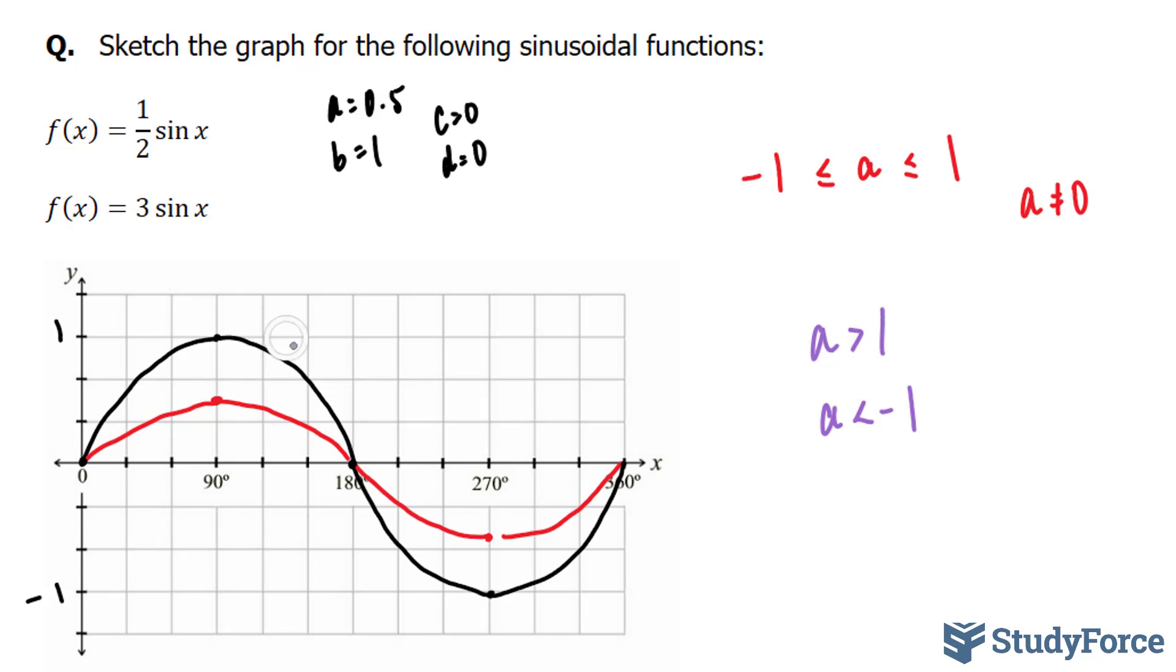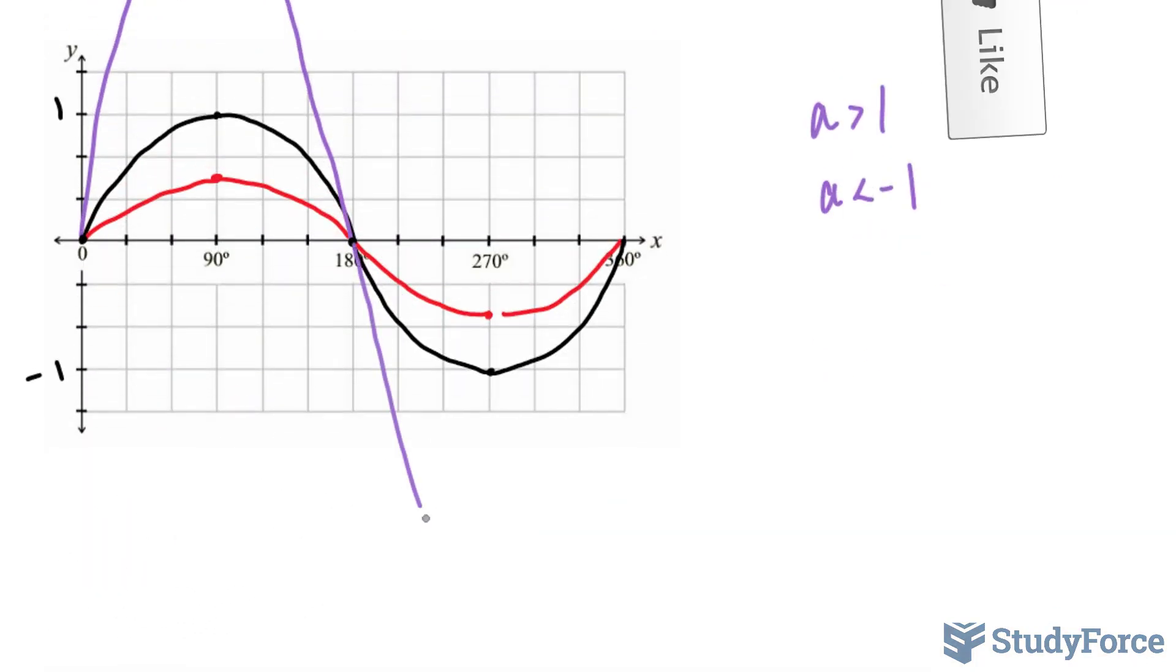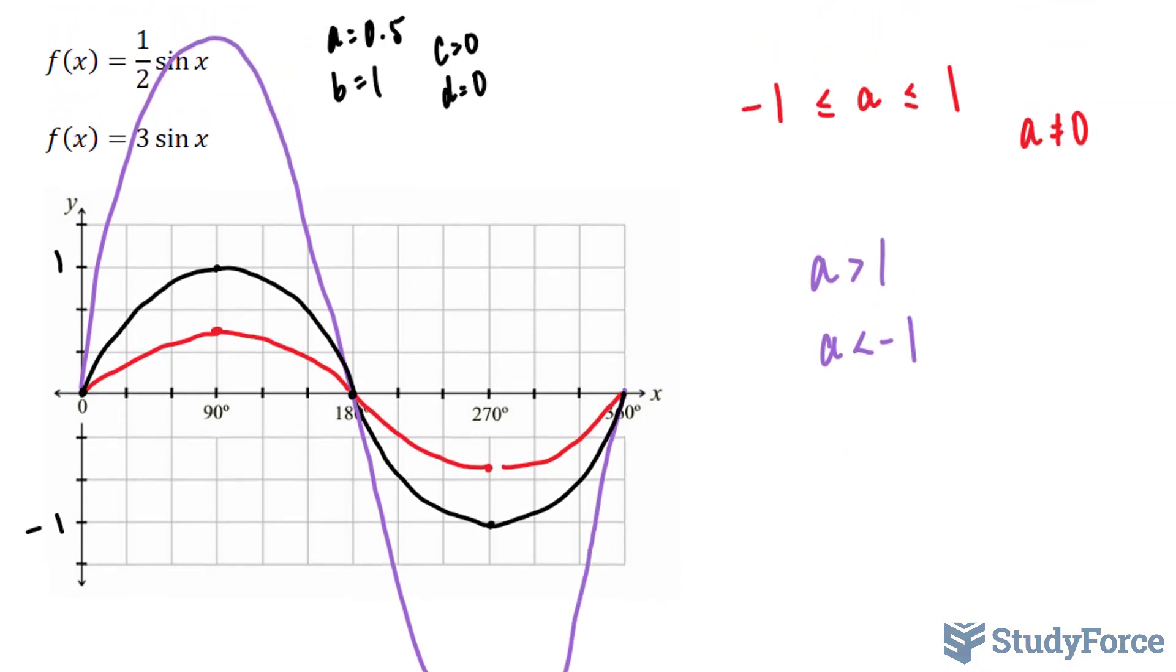...which is the one that's shown, will be a lot taller than it was. That is, three times taller. And you would end up with a wave that looks like this. And this is referred to as a vertical stretch.